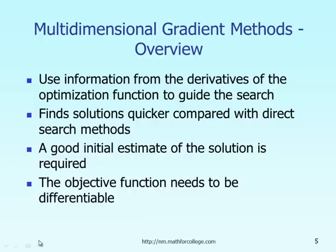As you see on the screen, let me talk to you about an overview of multidimensional gradient methods. In the method I'm going to explain, we need to make use of information about the derivative of the gradient of the function that we want to optimize. Because we make use of the derivative information of the objective function, we can expect that the optimum solution can be found quicker compared to the direct search method explained in the earlier lecture.